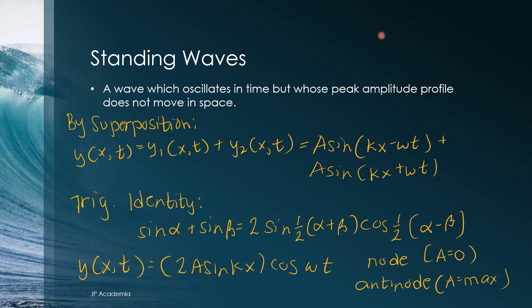When amplitude of standing wave is 0, the point is called a node. On the other hand, when the amplitude is at maximum, the point is an anti-node.